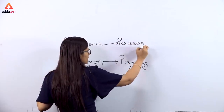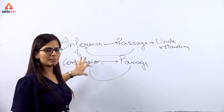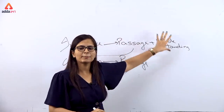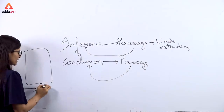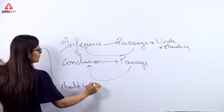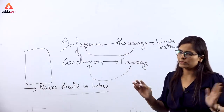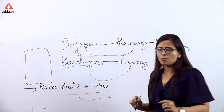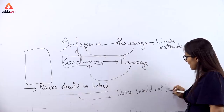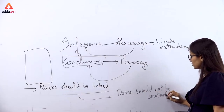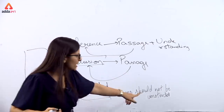Inference is different: you study the passage, you use your own understanding, and on that basis you draw a conclusion. For example, from a passage I concluded that rivers should not be linked because it creates water wars. That is the conclusion — directly from the passage. The inference I drew is that dams should not be constructed, because if we construct dams, we change the course of rivers and interfere with them.